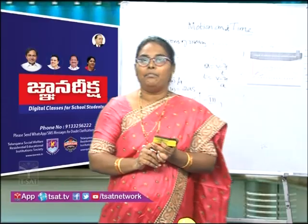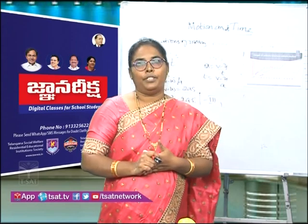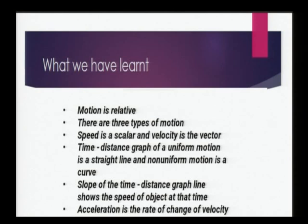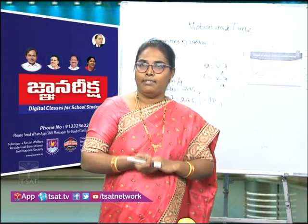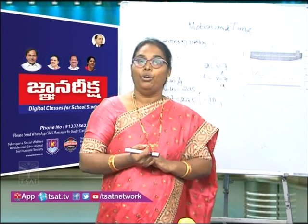Today we have learnt that motion is relative and there are three types of motion. Speed is a scalar and velocity is a vector. The distance-time graph of uniform motion is a straight line passing through the origin, while that of non-uniform motion is a curve or any shape. The slope of the distance-time graph gives the instantaneous speed. Acceleration is the rate of change of velocity. The three equations of motion are: V = U + AT; S = UT + ½AT²; and V² − U² = 2AS.